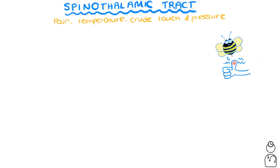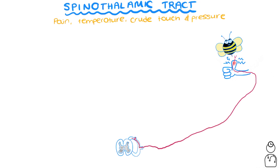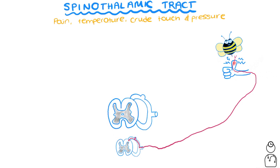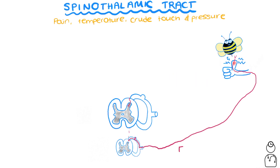Let's say you get stung by a bee on your finger. It'll get picked up by a nociceptor, and a nerve will relay this information to your spinal cord. Now there's something a bit different about the spinothalamic tract. Right at the tip of the dorsal horns is something called Lissauer's tract. Some of the nerves in the spinothalamic tract can enter Lissauer's tract and ascend or descend spinal cord levels — for example, if this nerve is entering at C6, it might go up a level to C5 and then enter the dorsal horn. Once in the dorsal horn, this nerve synapses in an area called the substantia gelatinosa. This is our first-order neuron.